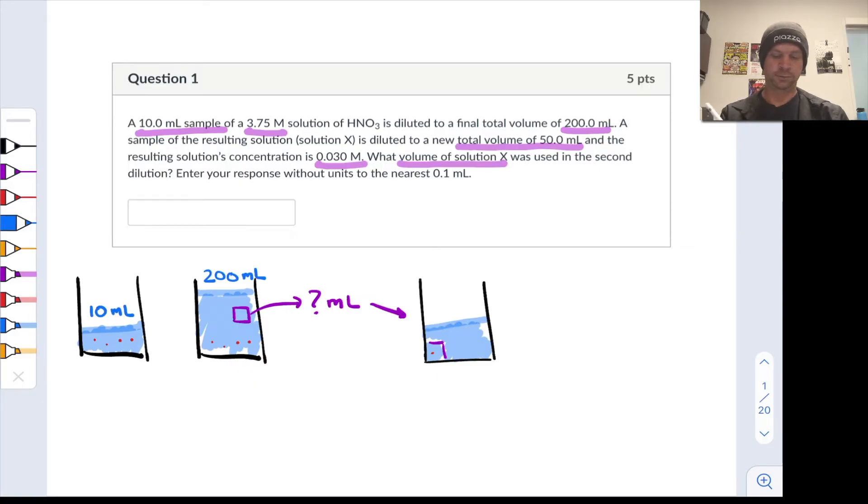What we want to know essentially is the volume of solution X, solution X was the one that we made right here, the volume of that purple box. How much of that solution did we use to prepare the final solution? The final solution's concentration was 0.030 molar or moles per liter.